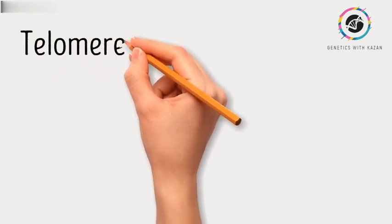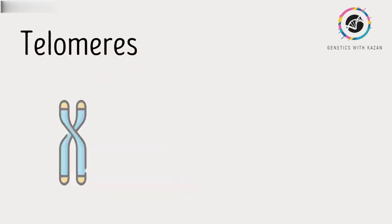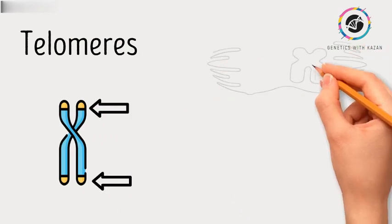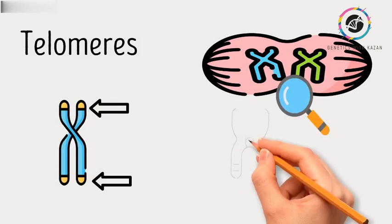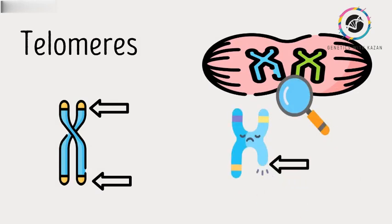Let's talk about something called telomeres. These are like little guards at the end of their chromosomes. What typically happens during each cell division is the gradual loss of telomeres, those protective caps at the end of chromosomes. This loss occurs during the DNA replication process.